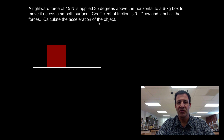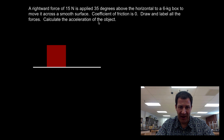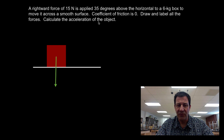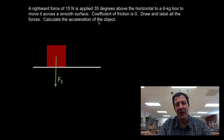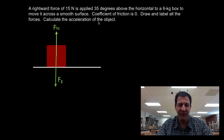The first thing we're going to do is draw and label all the forces acting on the object. The first force is the force of gravity — it points straight downwards. The next force is the normal force. The box is not falling through the surface, so there must be a force applied by the surface onto the box — that's the normal force.